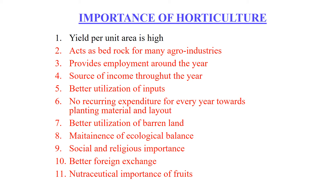Maintenance of ecological balance is important — fruit trees help in checking soil erosion and maintain ecological balance. The standard is that 33% of the earth's area should be under tree cover, which improves rainfall conditions and the microclimatic conditions of a particular area and also helps to reduce environmental pollution.